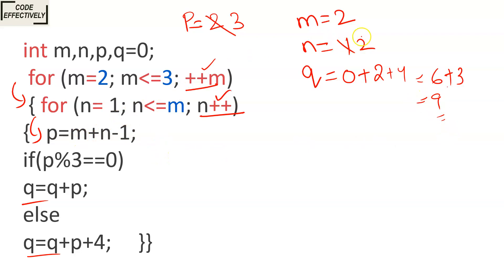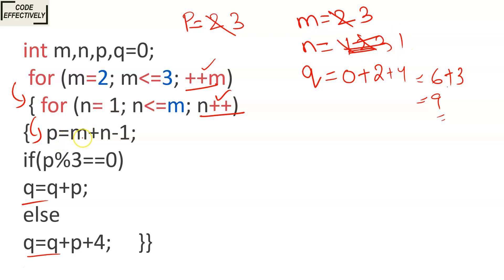N increments to 3 — 3 is not less than or equal to 2, condition is false, inner loop exits. M increments to 3. M is less than or equal to 3: 3 equals 3, condition true, we come inside the outer loop again. N resets to 1 and we start the inner loop again. It comes inside the loop and P equals M plus N minus 1.